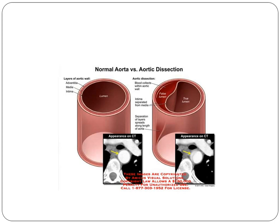Normal aorta versus aortic dissection: the normal aortic wall has adventitia, media, and intima. In aortic dissection, the intima layer separates from the media and blood collects in between.